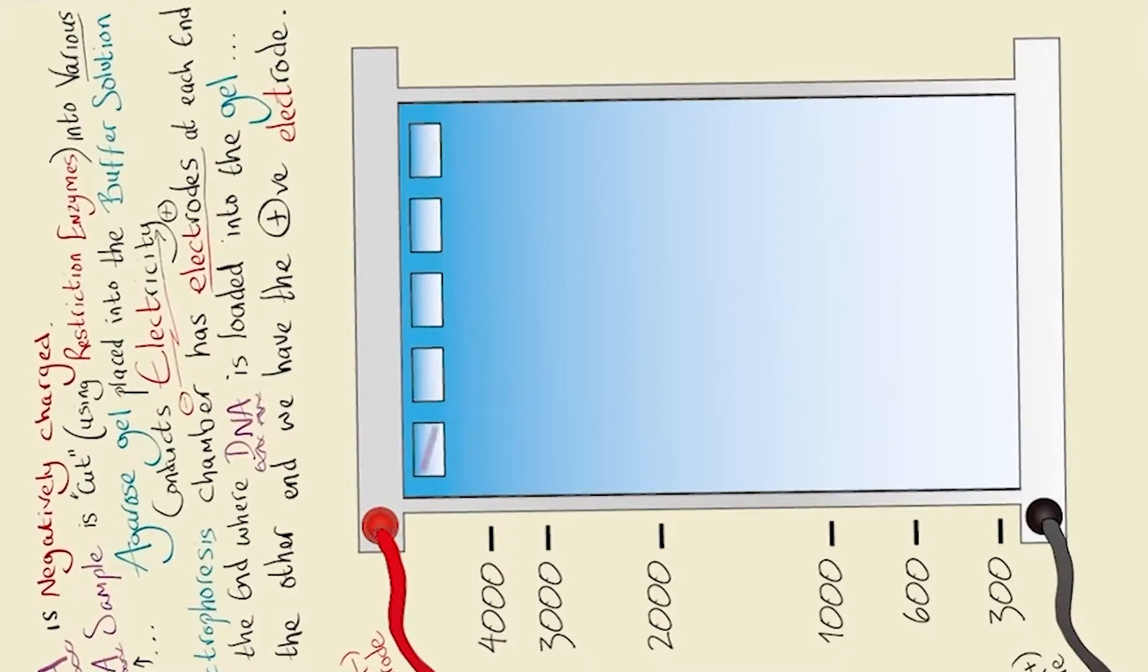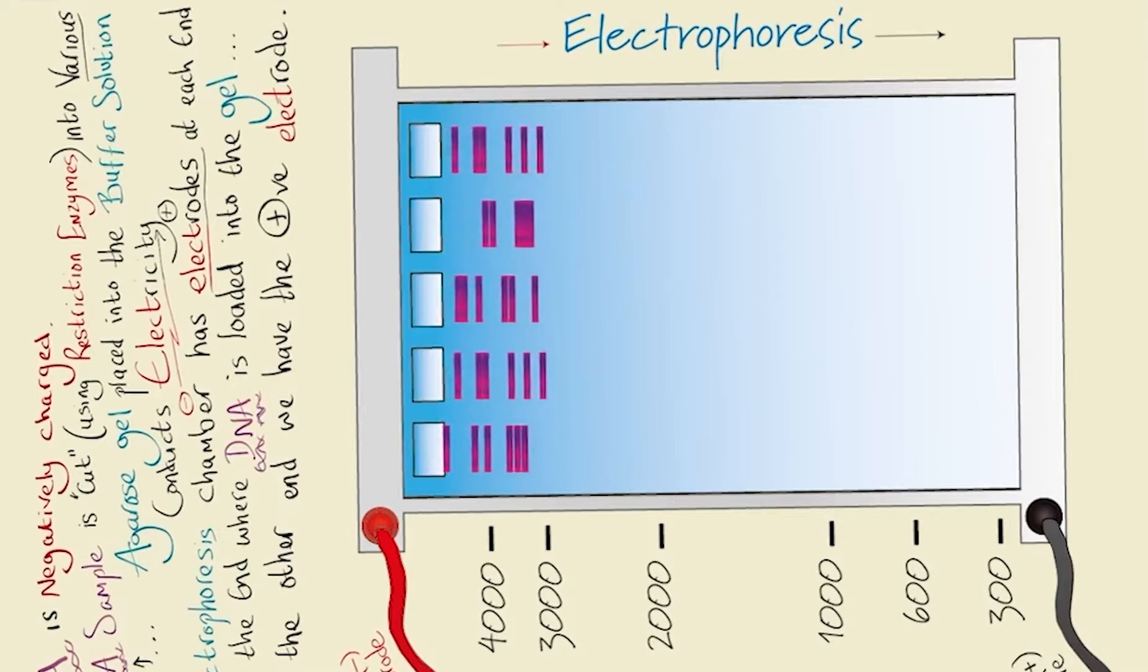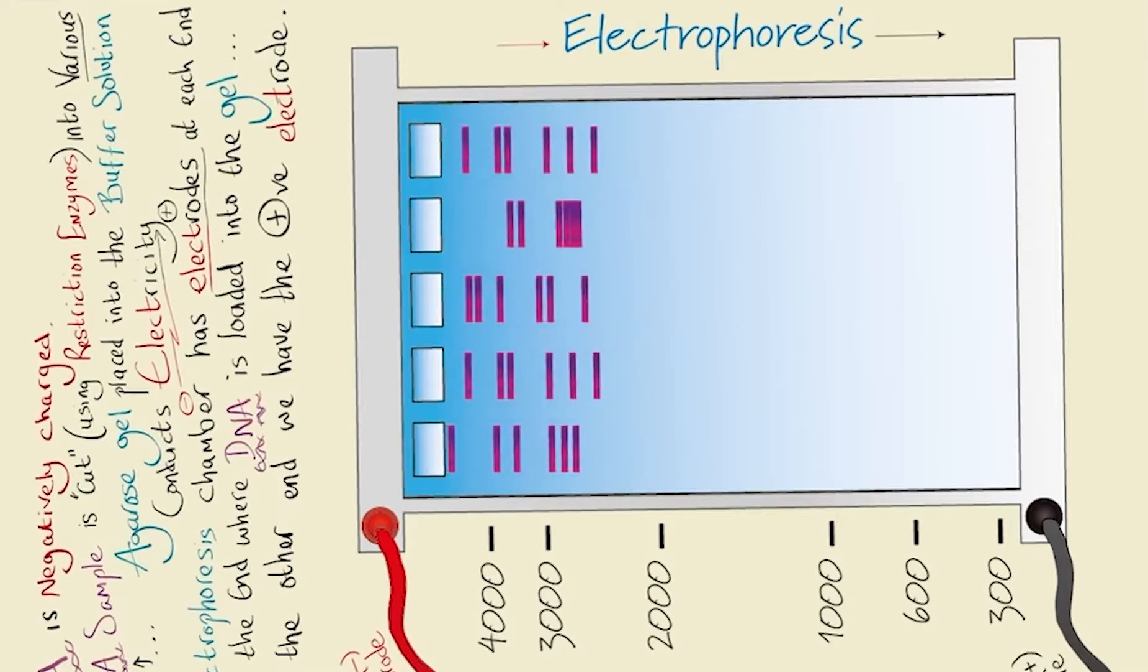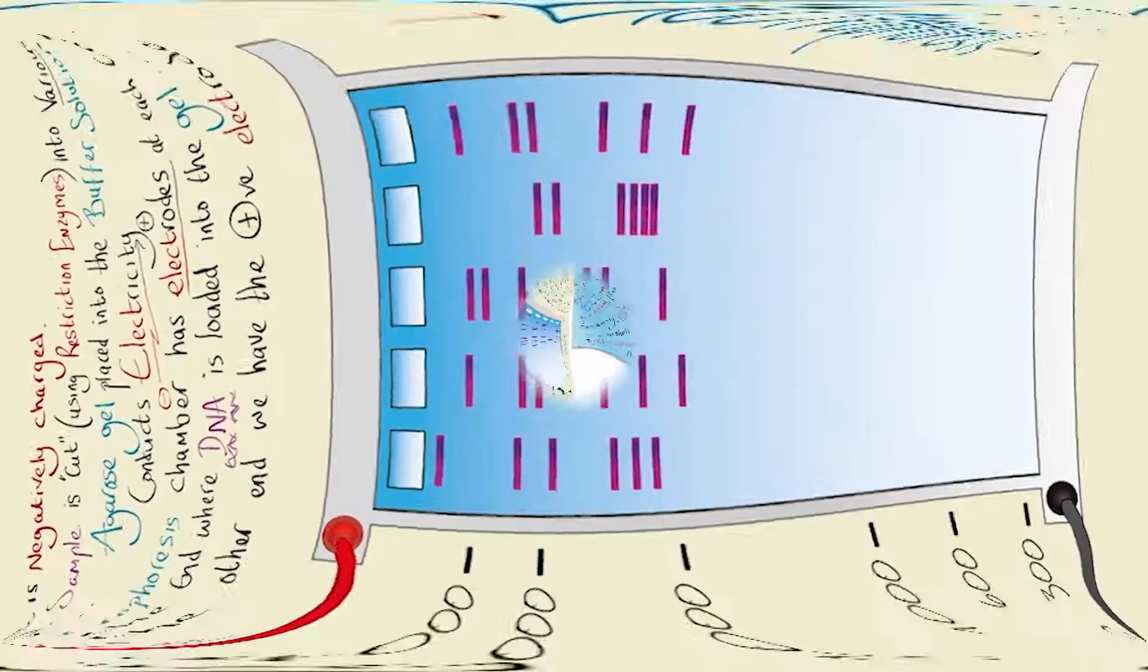Here we can see when we place our DNA fragments into the wells of the agarose gel at the negative electrode, DNA is repelled because DNA is also negative. Simultaneously, DNA is attracted to the positive electrode, so in a nutshell the DNA fragments are dragged through this gel.